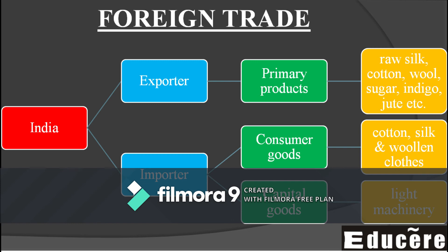For imports, India imported two types of things: consumer goods and capital goods. Consumer goods are goods directly consumed. Cotton, silk, and wool were sent from India to Britain's factories as raw materials, and then these finished clothes were dumped back into the Indian market as imports — cotton, silk, and woolen clothes were imported into India.